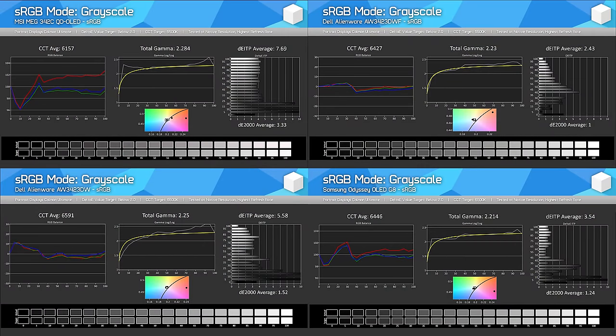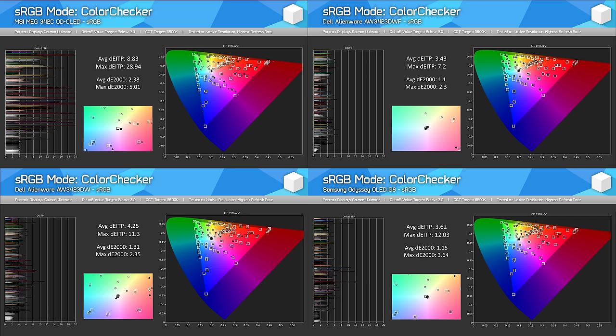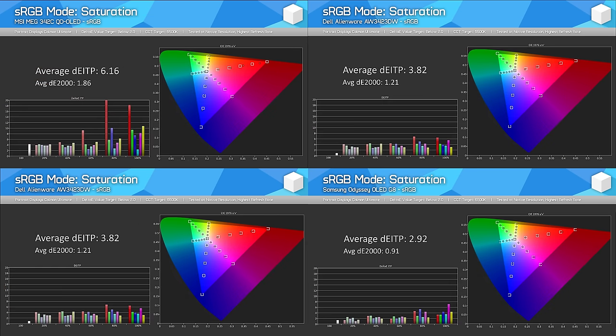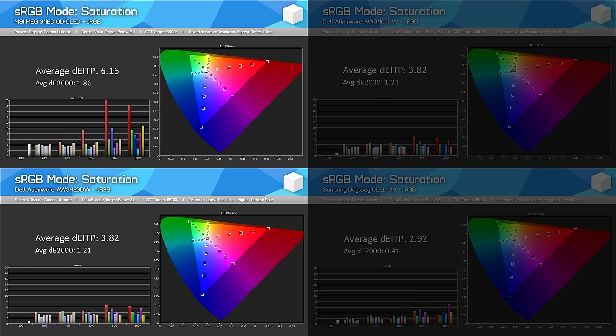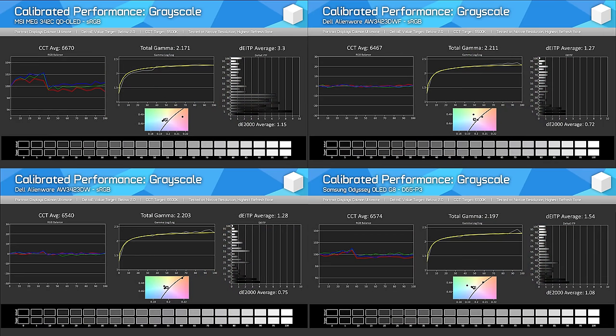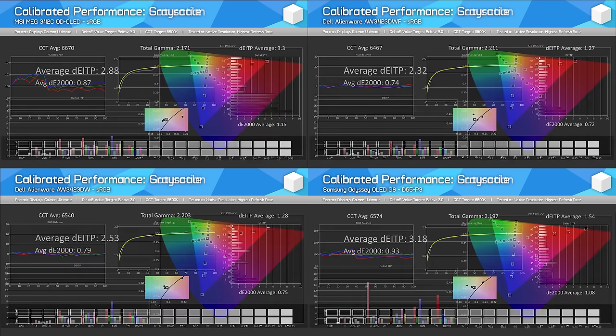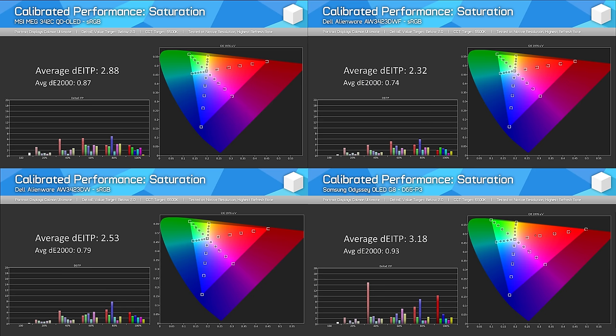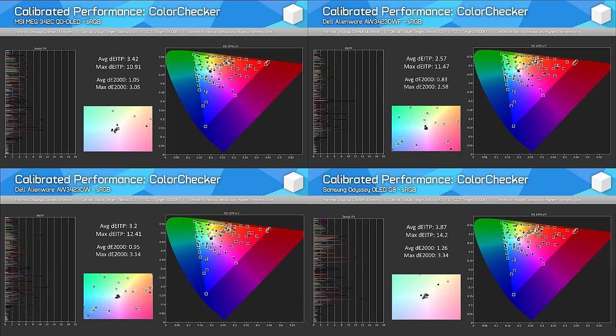For the best SDR performance with the least fiddling, sRGB modes are available on all models. It's a battle between the DWF and Samsung Odyssey OLED G8: the DWF is slightly more accurate by default but limits other adjustments through locked settings, while the OLED G8 is slightly less accurate but still great while allowing full control over white balance and other settings. Due to the more open approach to adjustment in the sRGB mode, I feel the OLED G8 is the better calibrated product. In terms of fully calibrated performance, you won't see much difference between models, but the OLED G8 can have the most calibration done at a hardware level, including two-point white balance controls and a fully unlocked sRGB mode.